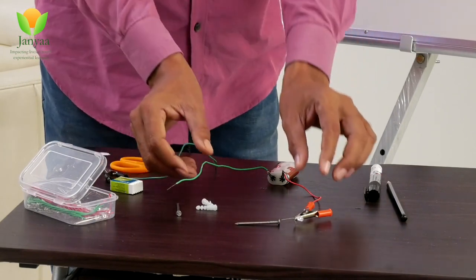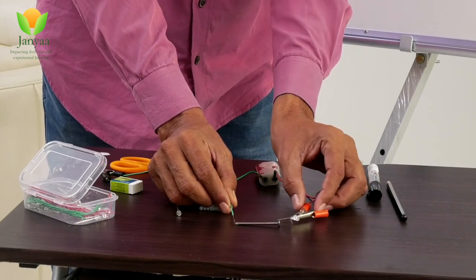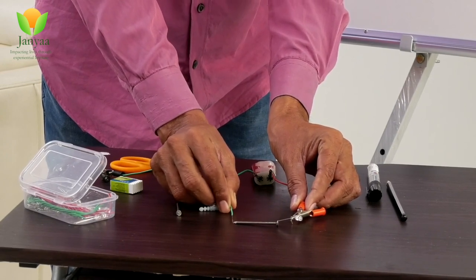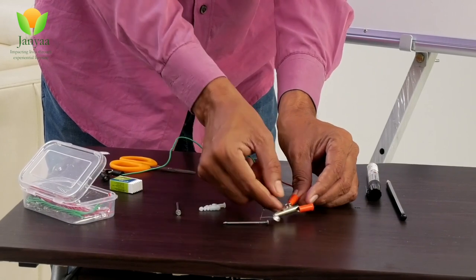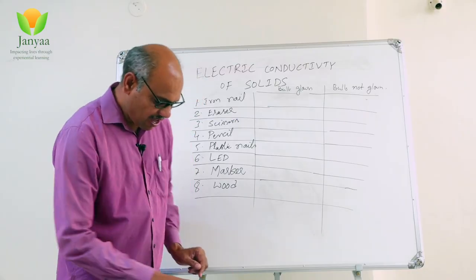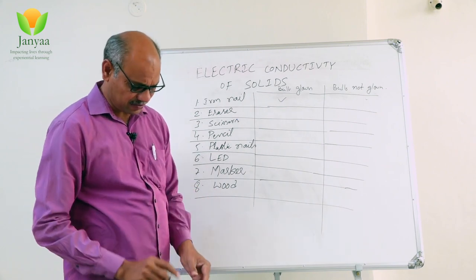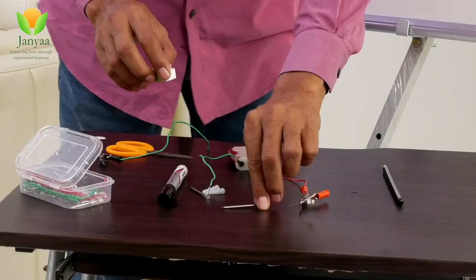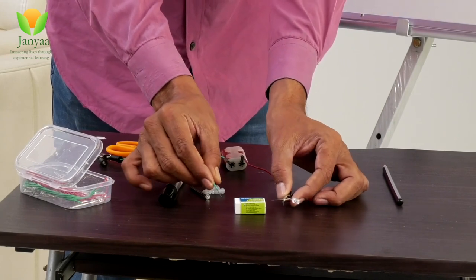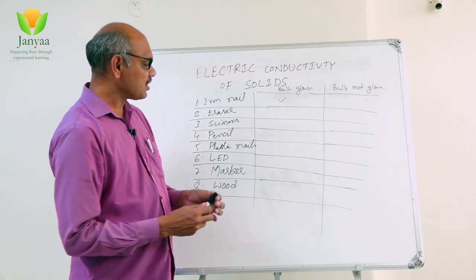First, I am checking the iron nail. I touch one end of the iron nail to one terminal and the other end to the LED connection. You can observe the light is glowing — that means the iron nail allows current to pass through it. Iron nail is a conductor. Now I am using the eraser. Connecting it — you can see it is not allowing the current to pass through it.